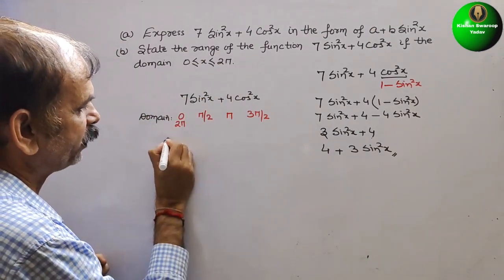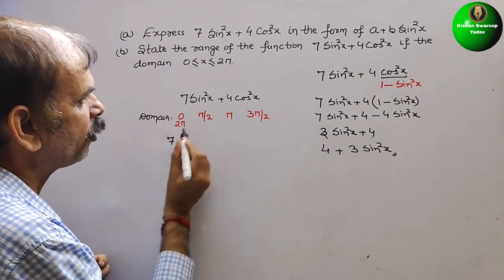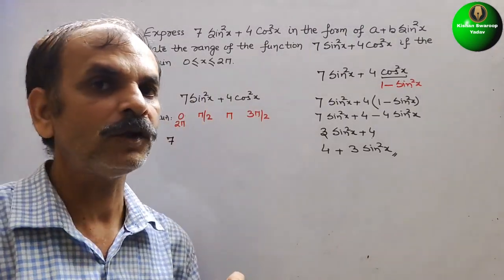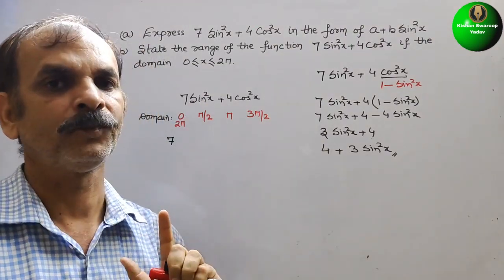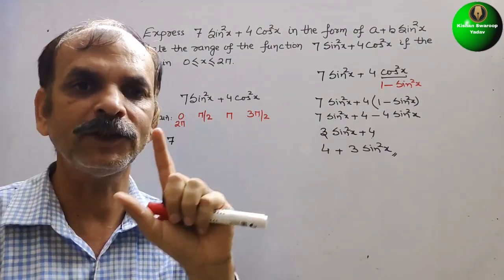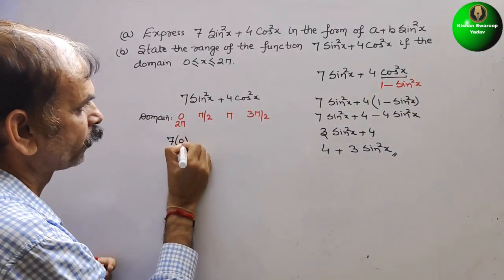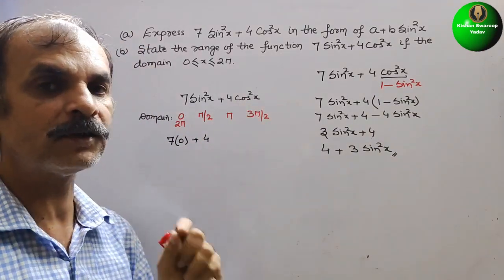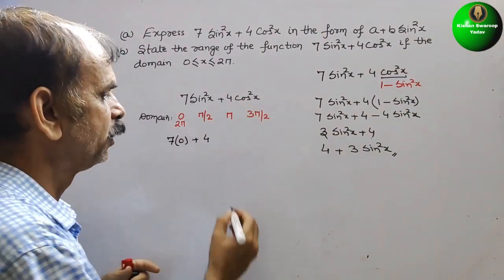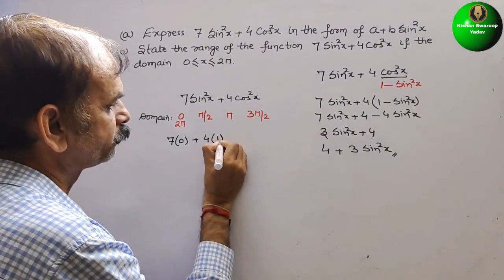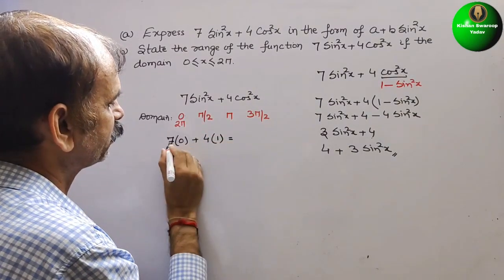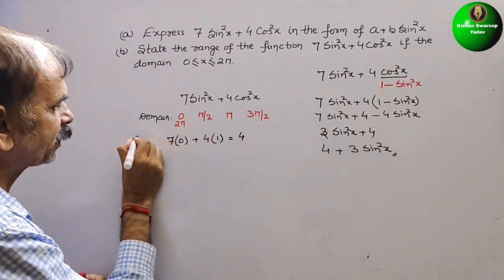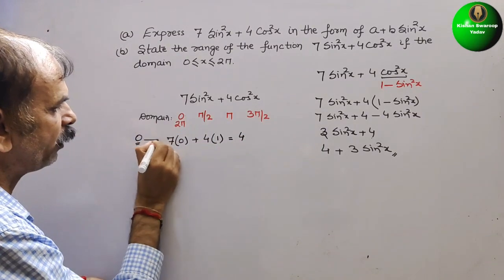At x = 0: sin(0) = 0, so sin²(0) = 0. And cos(0) = 1, so cos²(0) = 1. Therefore: 7(0) + 4(1) = 0 + 4 = 4. So f(0) = 4.